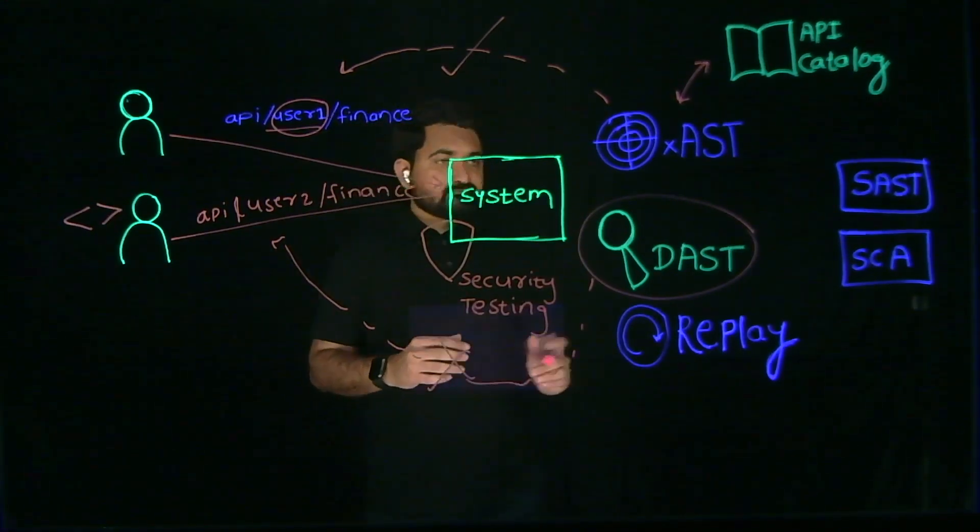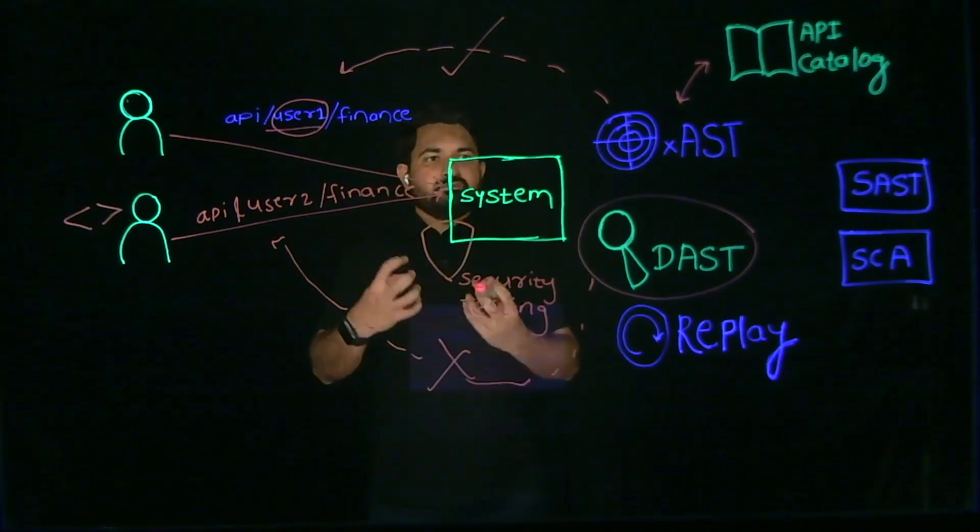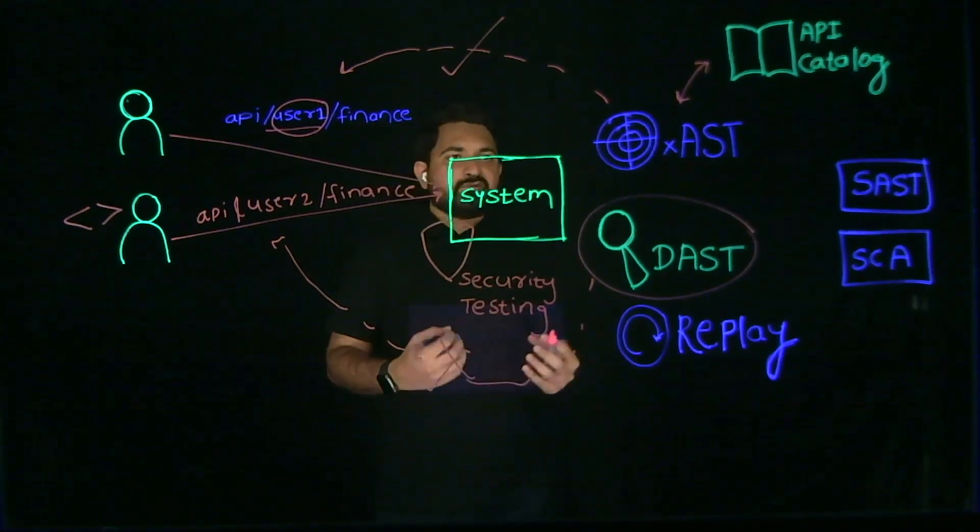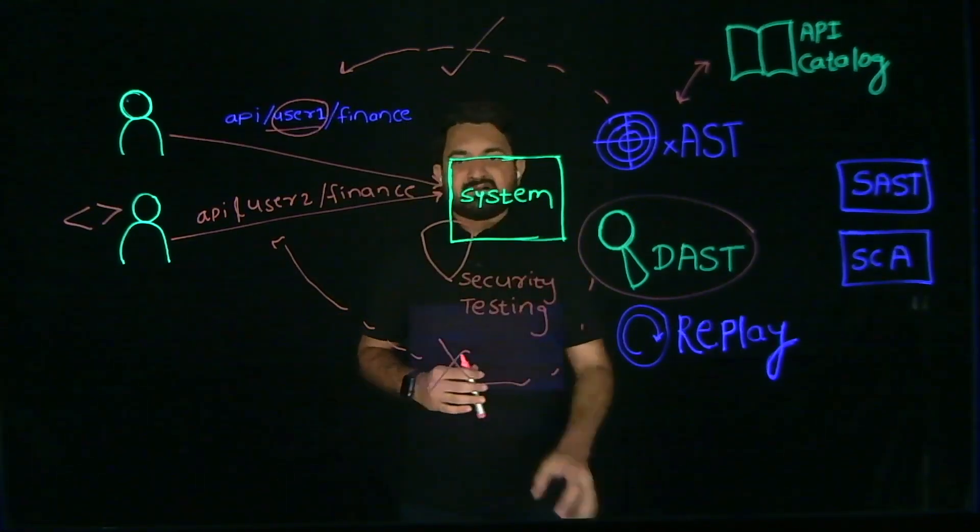That's where Traceable XAST provides a complete suite to manage your security posture, but at the same time, find the vulnerabilities which traditional tools like DAST can't catch.